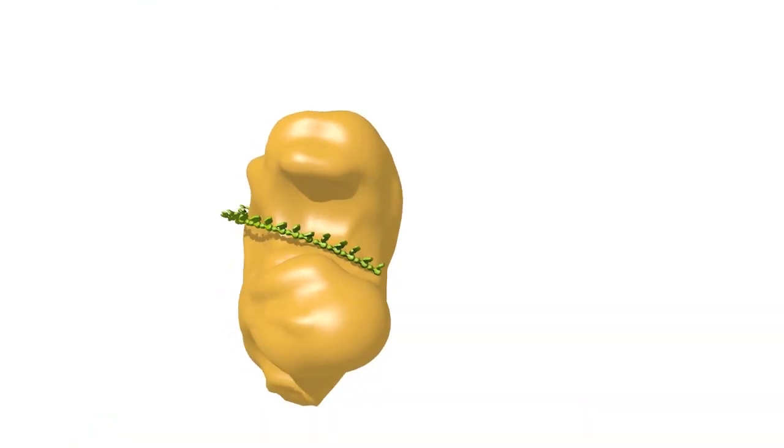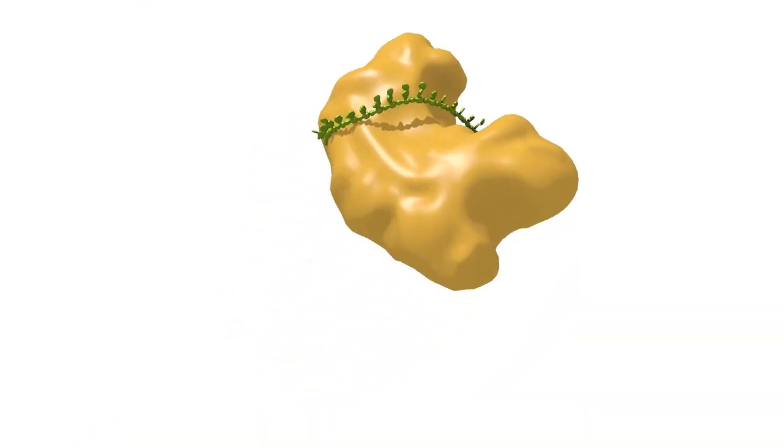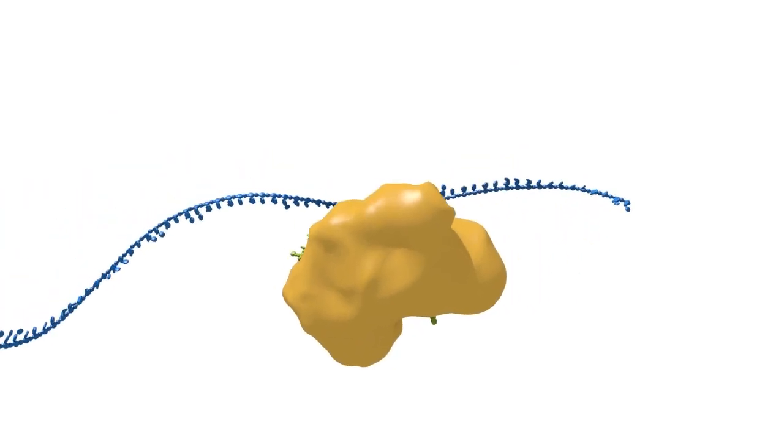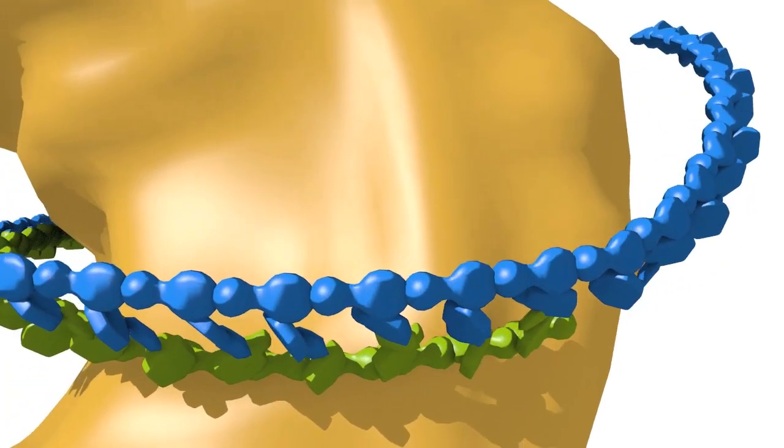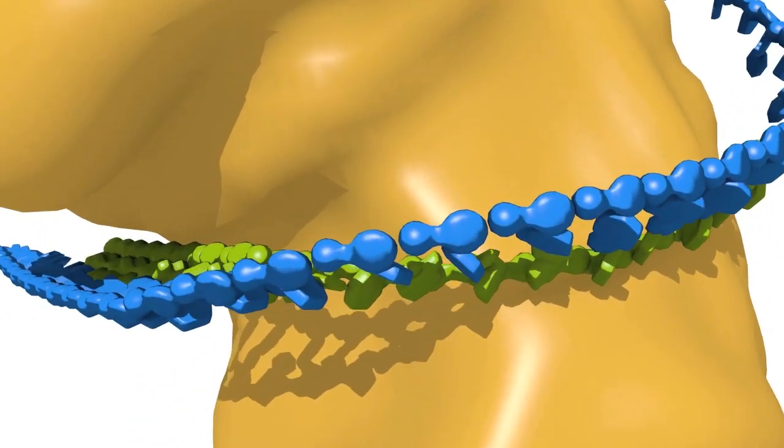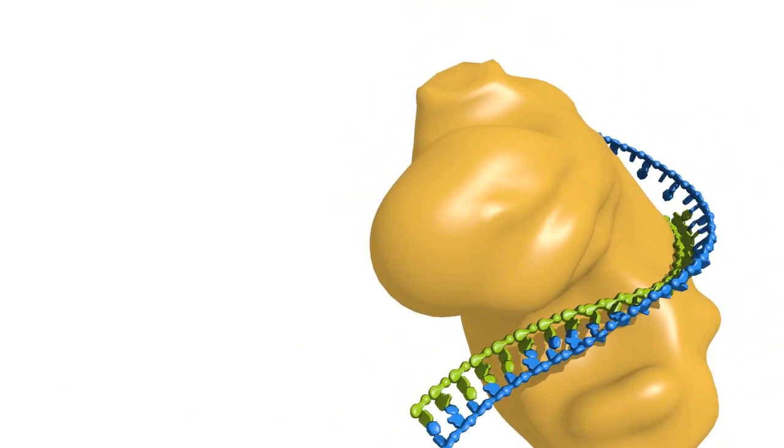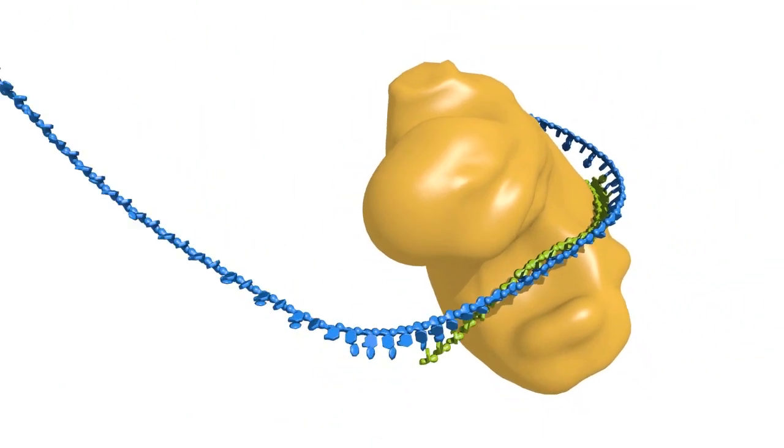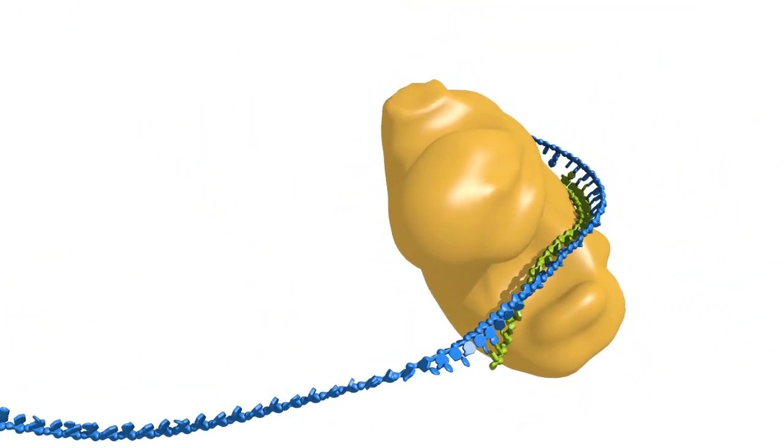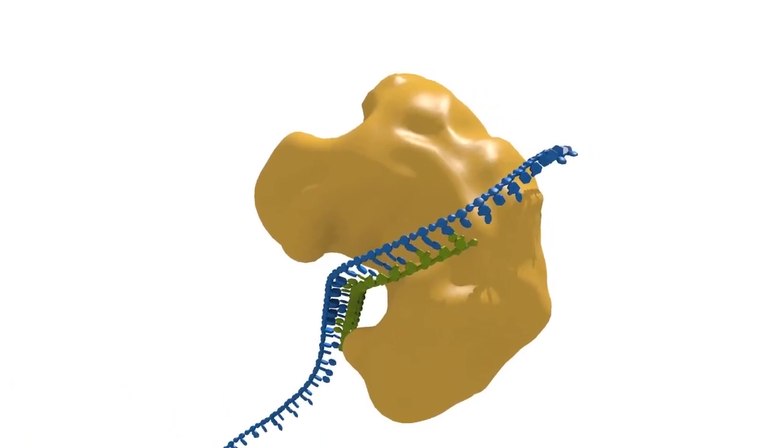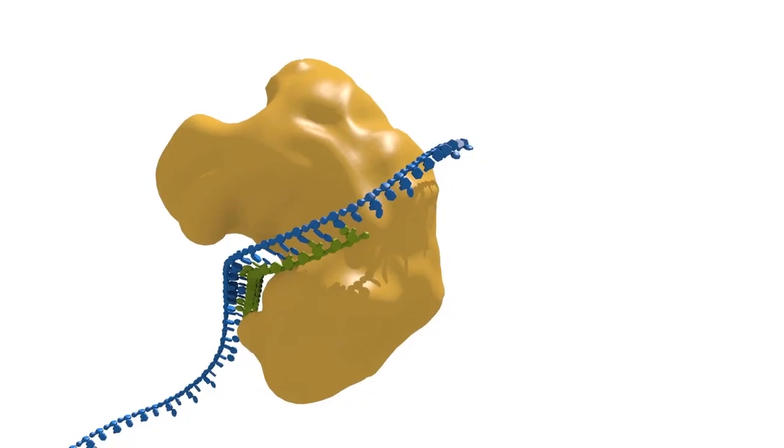The resulting single-stranded siRISC complexes can now scan for their fully complementary target RNAs. In contrast to the situation with the miRISC complexes, fully complementary binding to the target RNAs leads to the 3' end of the siRNA being displaced from the PAZ domain of the argonaute as extended duplex nucleic acid forms. This results in conformational changes that activate the cleavage activity of the RNase H-PIWI domain.